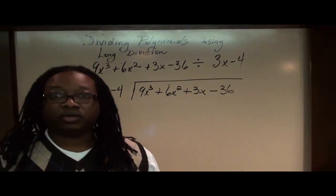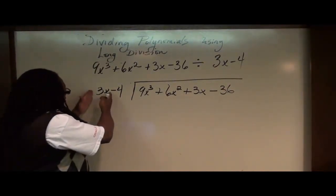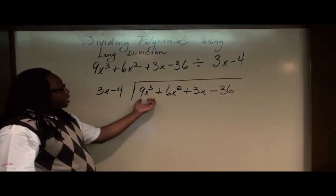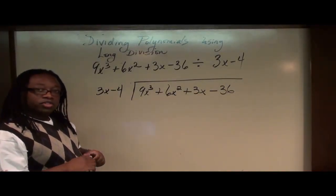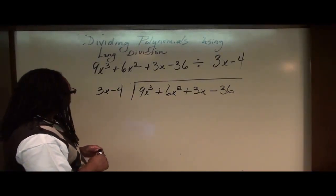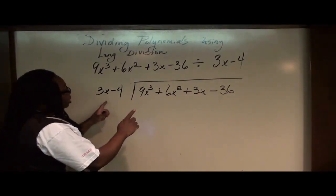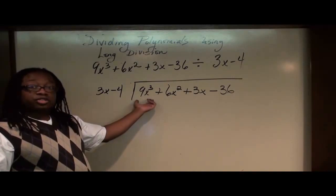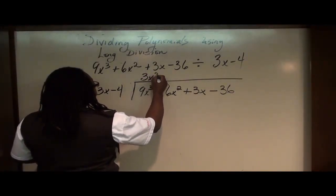So what we're going to do now is to take a look at this number here, 3x, and determine what number can I multiply to get 9x cubed, just like we did in long division with regular numbers. Well, it turns out that 3 times 3 is 9, so the number should at least be 3, and 3x times 3x squared gives us 9x cubed. So we put here 3x squared.